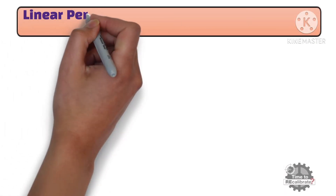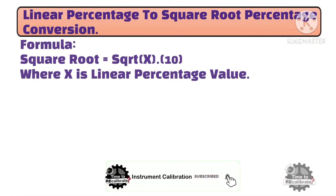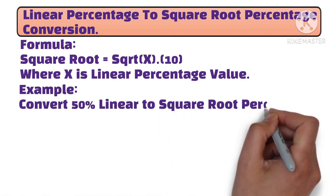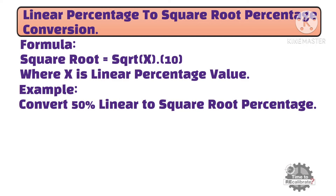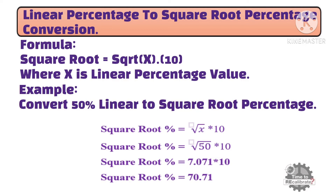Now, let's try to understand linear percentage to square root percentage conversion. This is a standard formula for linear percentage to square root percentage conversion, where x is the linear percentage value. For example, convert 50% linear to square root percentage. We put 50 into the formula: the square root of 50 is 7.071, which is multiplied by 10, giving 70.71.